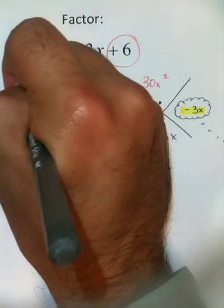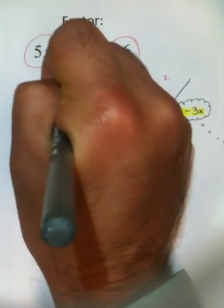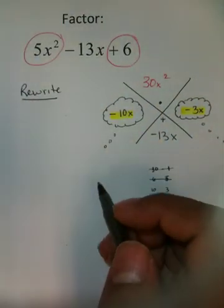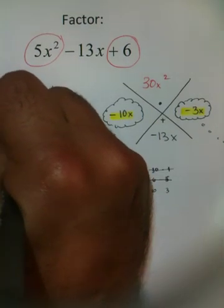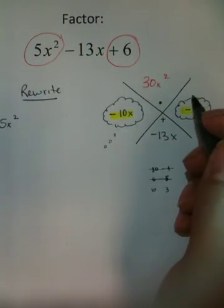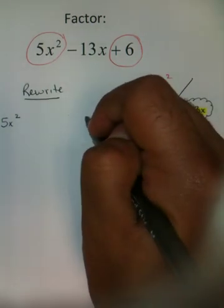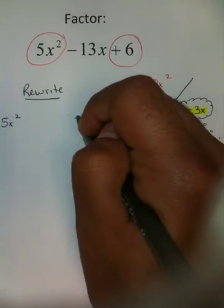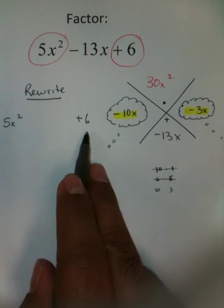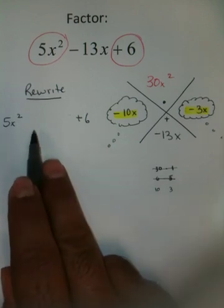You must rewrite your problem. The way you're going to rewrite it is you're going to take that 5x², what you started with, and that positive 6, what you ended with. Beginning, end.